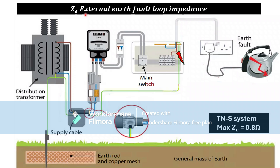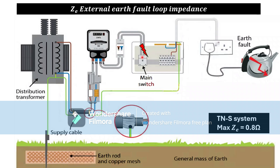Ze is the external earth fault loop impedance. From the distribution board, it goes to the supply transformer and comes back to the main switch — this is the external side, outside of our house. We don't have access to that part, but we can measure Ze. It is also measured in ohms for a TN-S system.